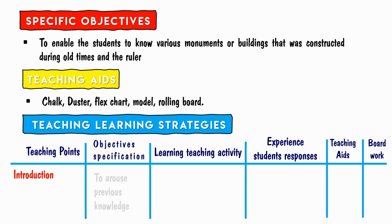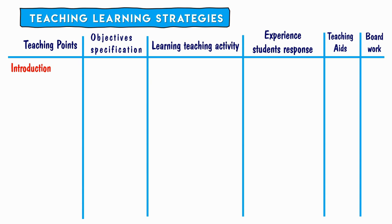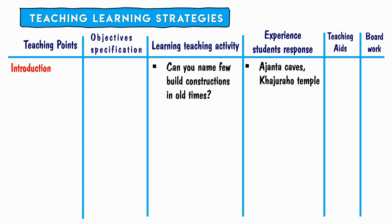Introduction: The objective here is to arouse previous knowledge. The teacher asks students: 'Have you seen the Taj Mahal? Who built it?' Students respond: 'Yes, we have seen it. Shah Jahan built it.' The teacher continues: 'Can you name a few building constructions from old times?' Students respond: 'Ajanta Caves, Khajuraho Temple, etc.' The teacher then asks: 'Can you name who built all these?' and students try to answer.